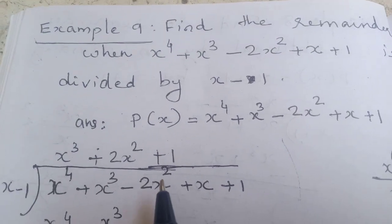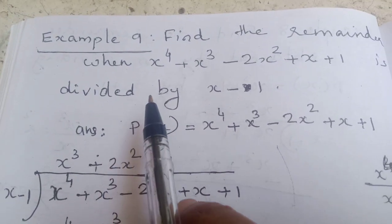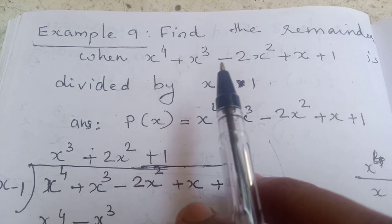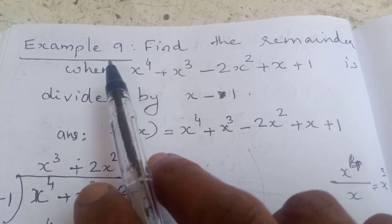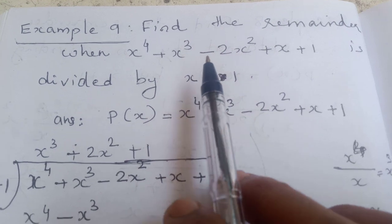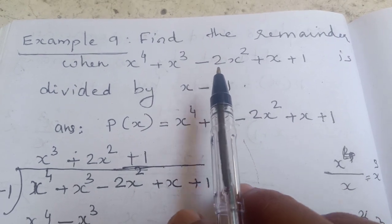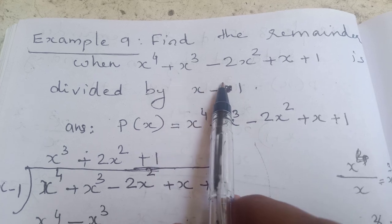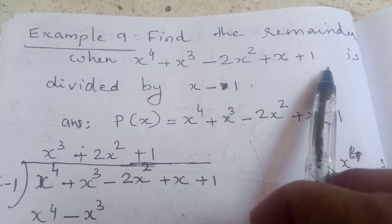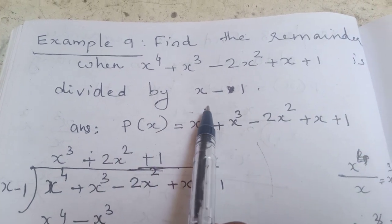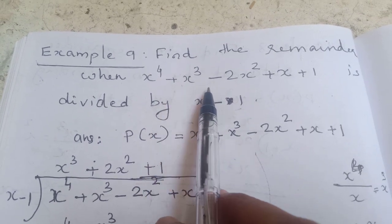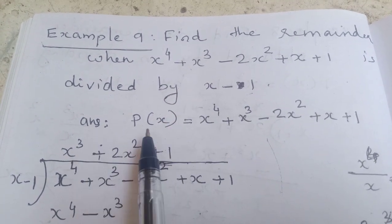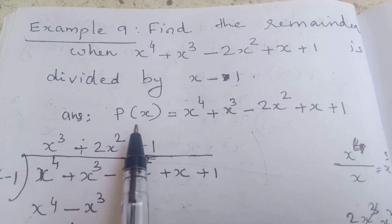Hi students, today I am going to discuss Example 9 from Class 9 Maths, the Polynomial chapter. Find the remainder when x⁴ + x³ − 2x² + x + 1 is divided by x − 1. They are giving p(x), and the answer is this one — p(x) equals the given polynomial.